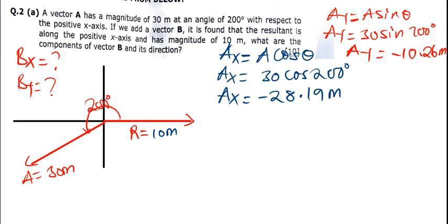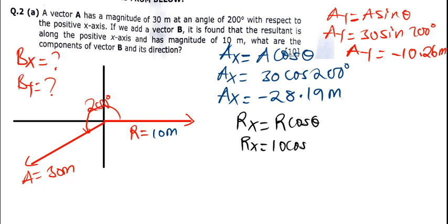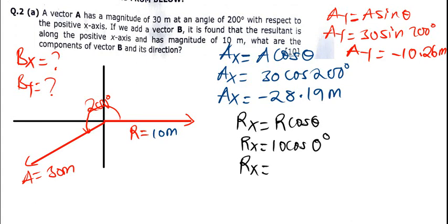Next, we find the components of the resultant vector. Rx = R cos θ. The resultant is along the positive x-axis, so the angle is 0 degrees. When the vector is along the positive x-axis, the angle is 0; negative x-axis is 180; positive y-axis is 90; negative y-axis is 270. So Rx = 10 cos 0° = 10.